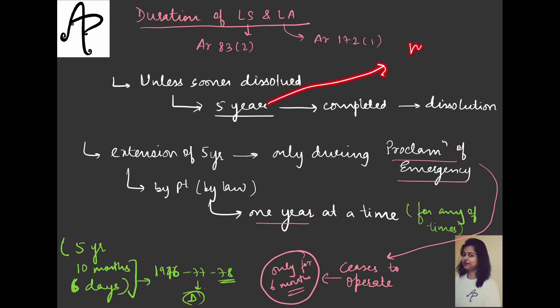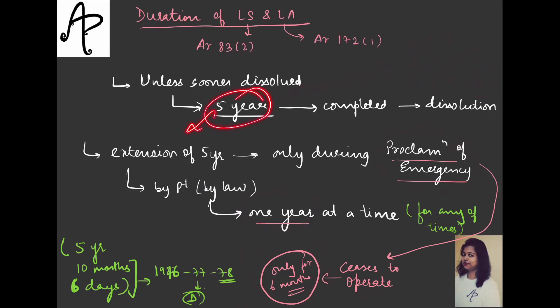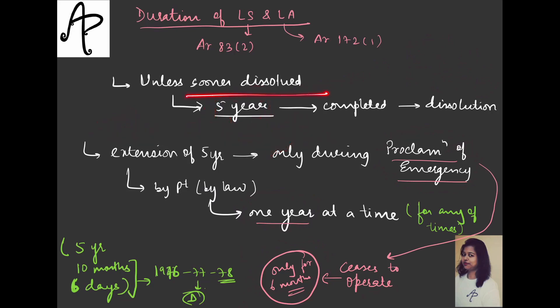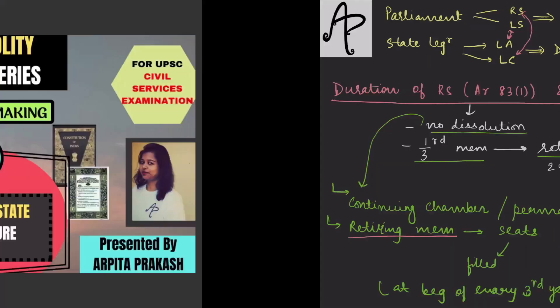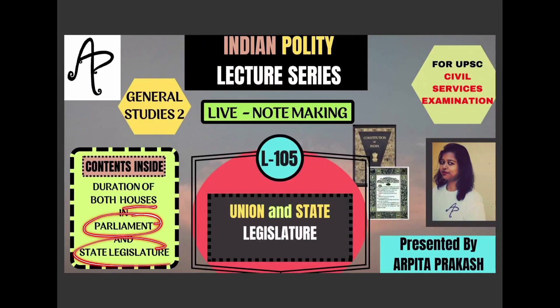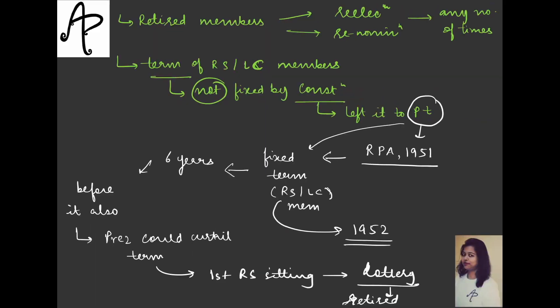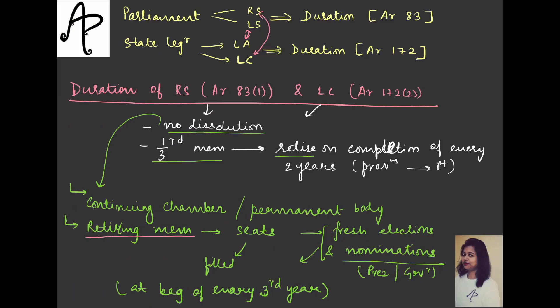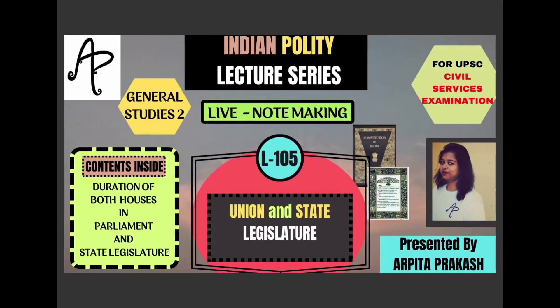So while we are giving a fixed tenure to Lok Sabha and Legislative Assembly, you need to understand that it is not a continuing chamber - it is not permanent, it is temporary in nature. There is a normal tenure or term, after which automatic dissolution happens, and before also sooner dissolution can happen either by the President or Governor - we have seen this already in the powers of President and Governor. This is all about the duration of both the houses - upper and lower - for both Parliament and state legislature. Understanding the similarities makes things easier. I'll meet you in the next video with the next topic.